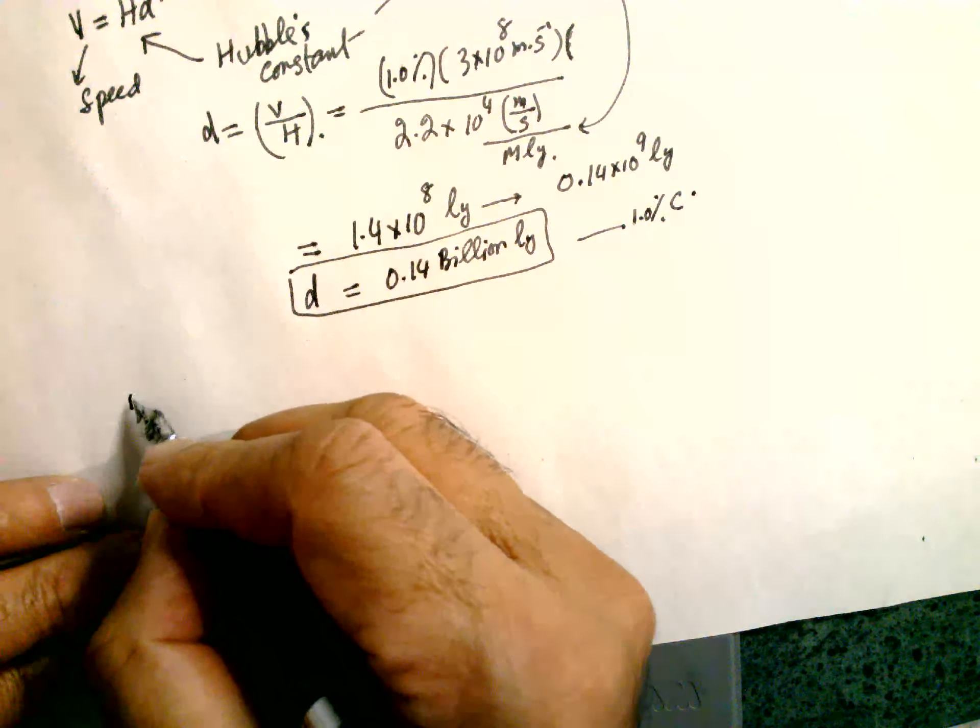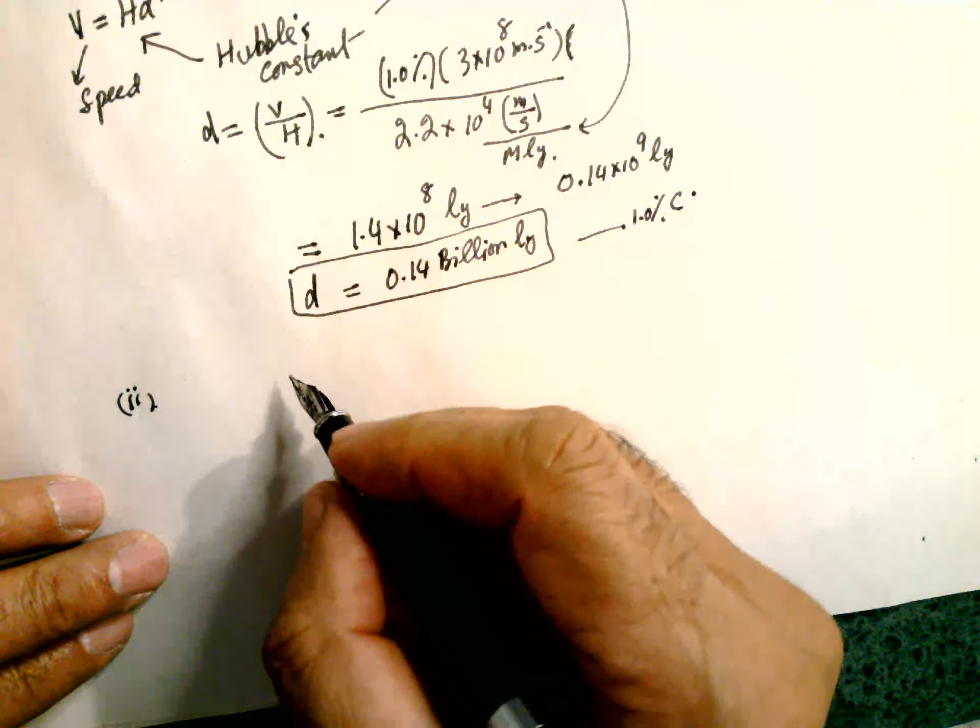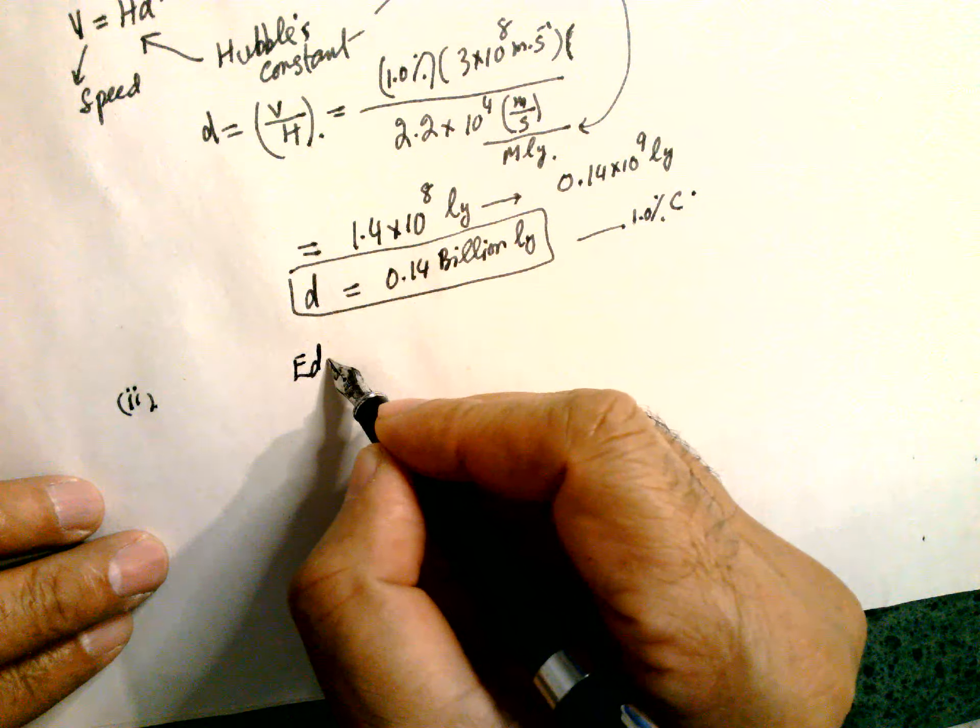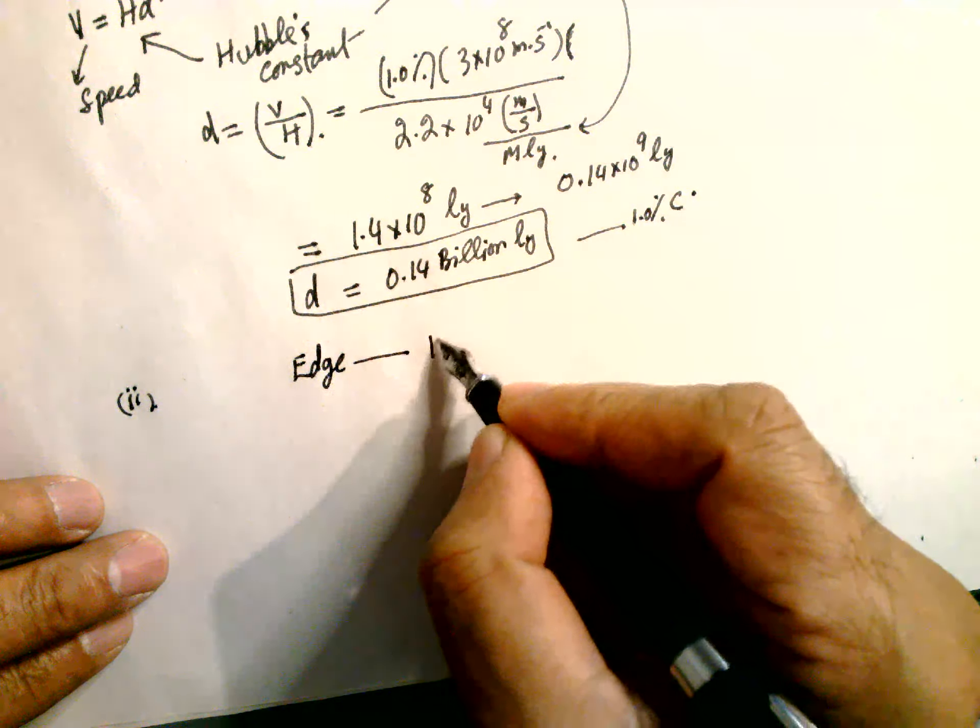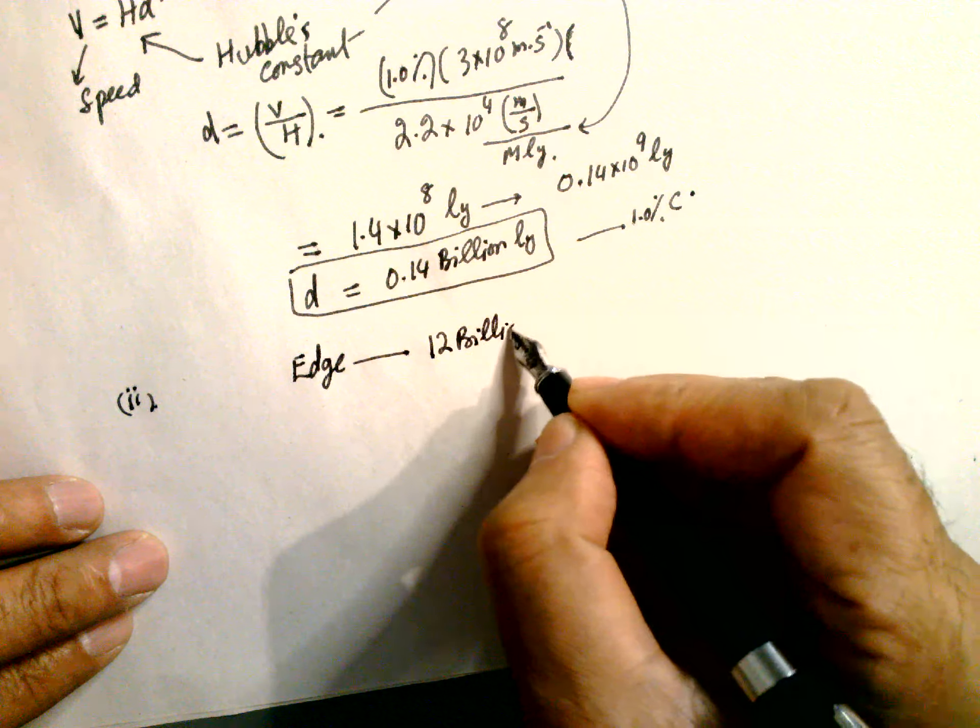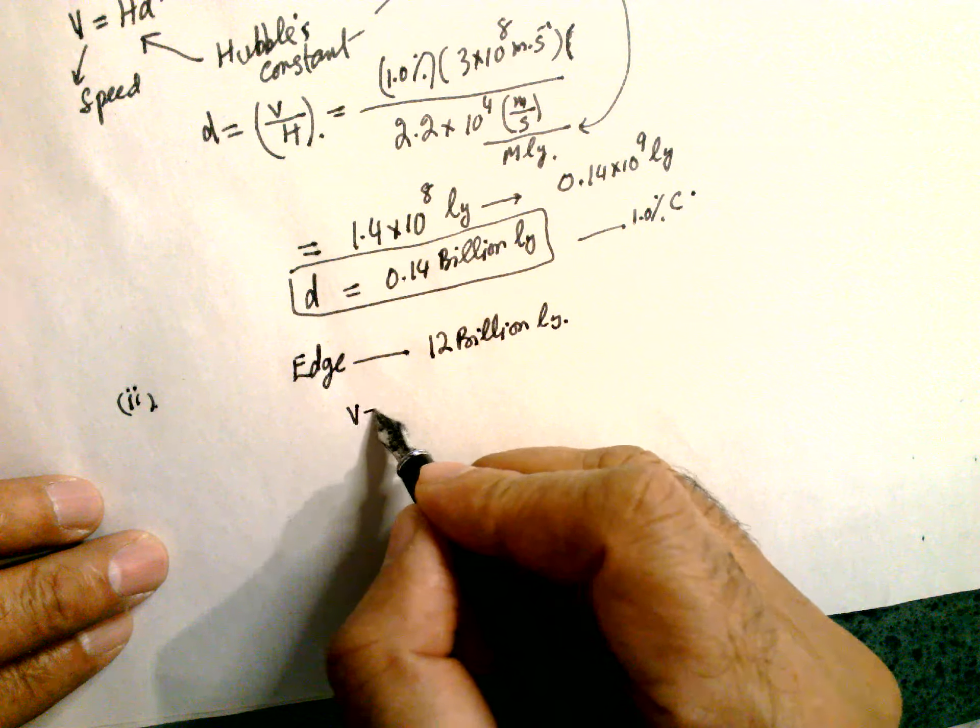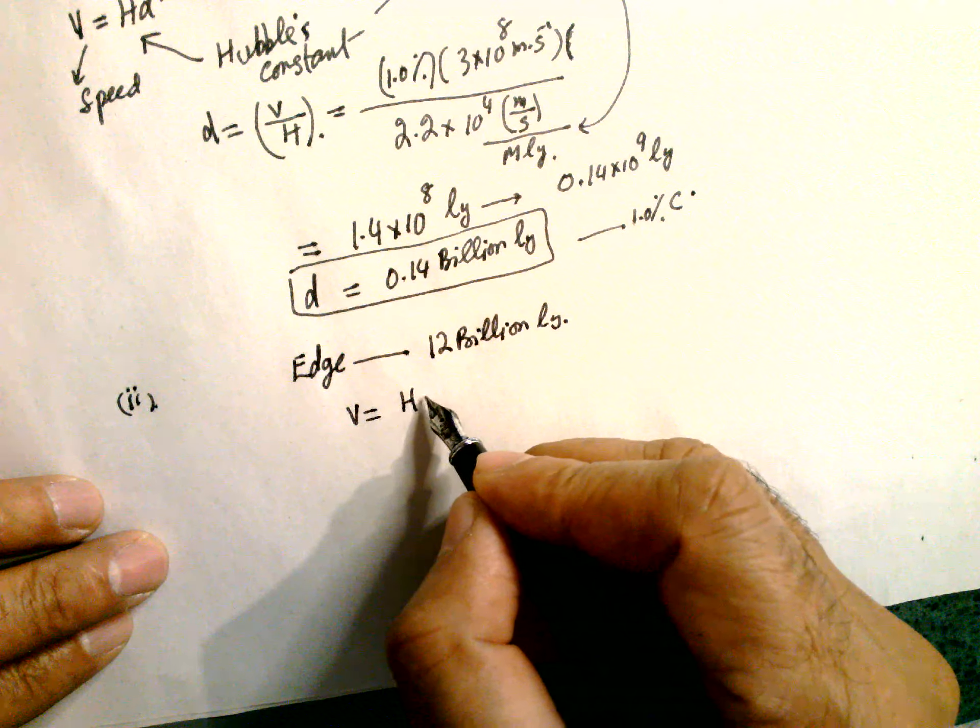Number two: if a galaxy is at the edge of the universe, at say 12 billion light years, then speed equals H times D,